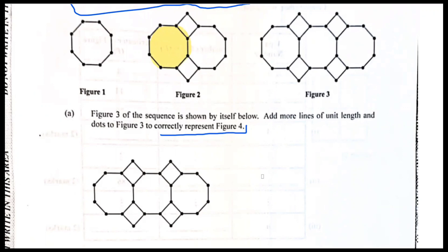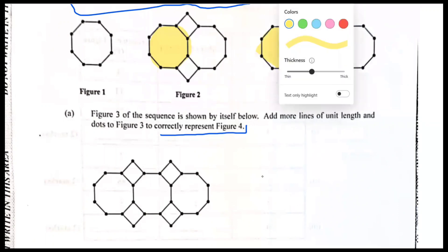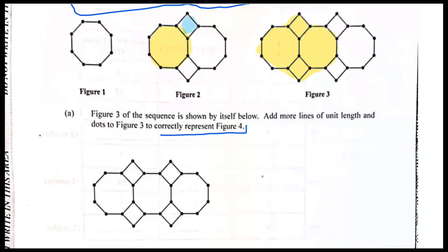If I look at figure three, I'm seeing figure two inside it — this is figure two right here. You can see what is added each time; I'm putting it in blue. That part is added to the previous figure every time.